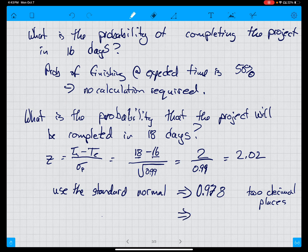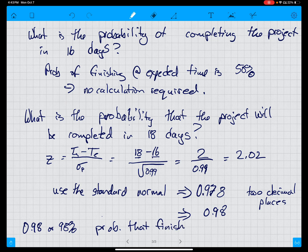From the standard normal table, you look up 2.02, and you get 0.978 to two decimal places. So you would get 0.98 is the 98% probability that you'll finish in 18 days.